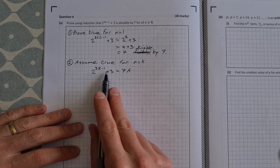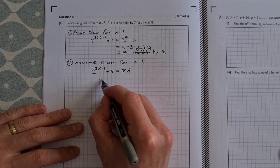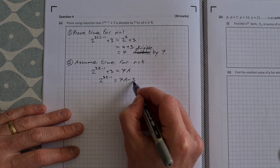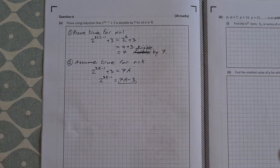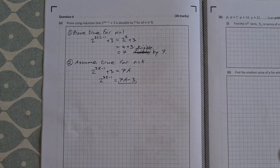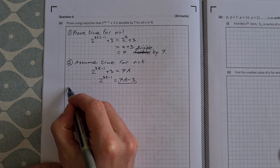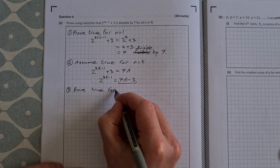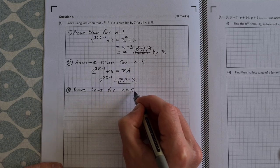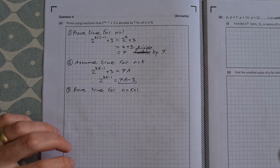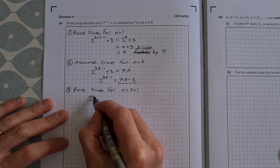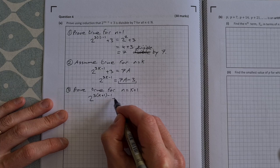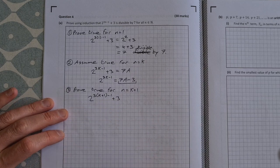And what you do with this here is you rearrange this to say 2 to the power of 3k minus 1 is equal to 7a minus 3. And this part here is going to be our substitution in our third part. Step 3 is we prove true for n equal to k plus 1. So that is 2 to the power of 3 times k plus 1 this time minus 1 plus 3. And we want to find out is that divisible by 7.